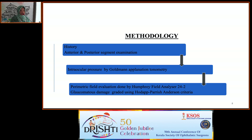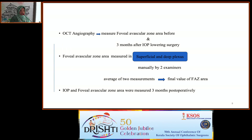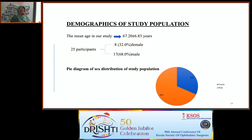Detailed history was taken and anterior and posterior segment examination was done. IOP was measured by Goldmann applanation tonometry. Perimetric field evaluation was done by Humphrey Field Analyzer 24-2. Glaucomatous damage was graded by Hodapp-Parrish-Anderson criteria. OCT angiography was used to measure FAZ area before and three months after IOP-lowering surgery. FAZ was measured in superficial and deep vascular plexuses manually by two examiners, and an average of the two measurements was taken as the final value.